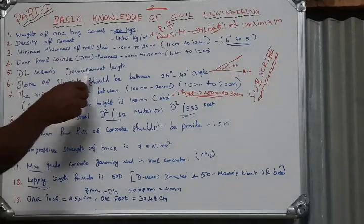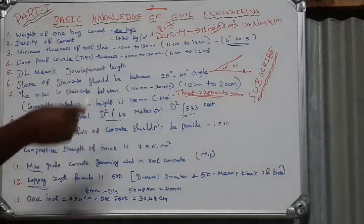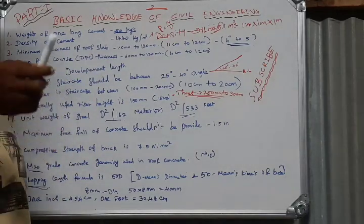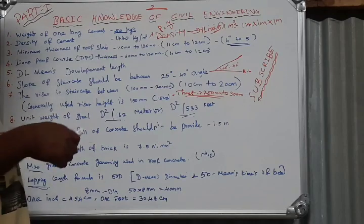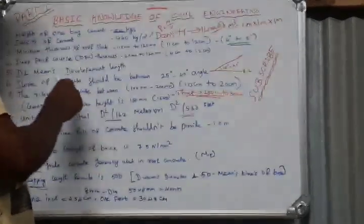DEL means Development Length. Development length has two types: horizontal and vertical for beam and slab.